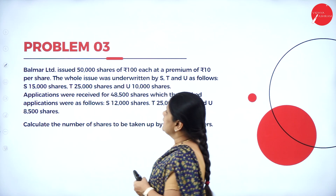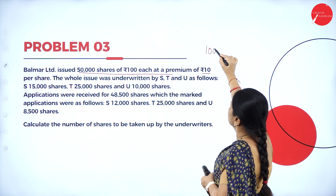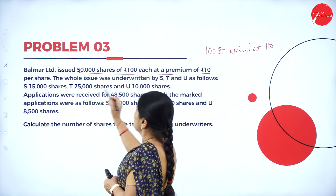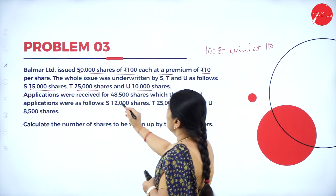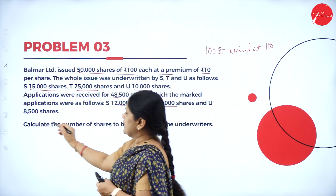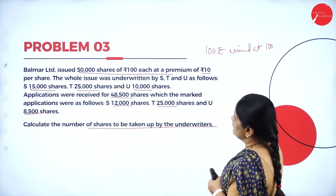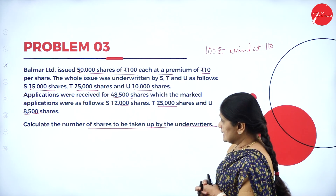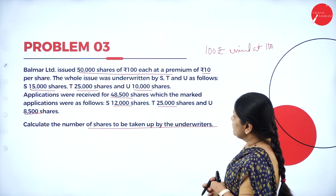Now problem 3. Balmar Limited issued 50,000 shares of rupees 100 at a premium of rupees 10 per share, so the issue price is rupees 110. The whole issue was underwritten as 15,000, 25,000 and 10,000. Applications were received for 48,500 shares. Marked applications were 12,000, 25,000 and 8,500. Calculate the number of shares to be taken up by each underwriter.